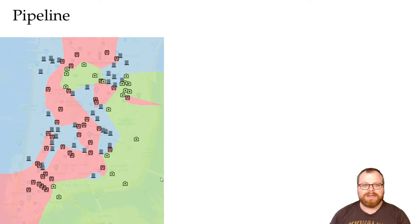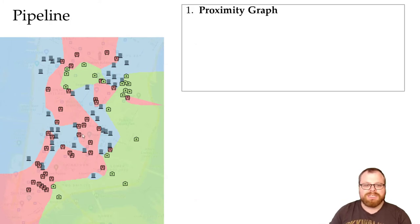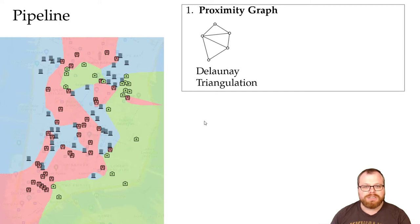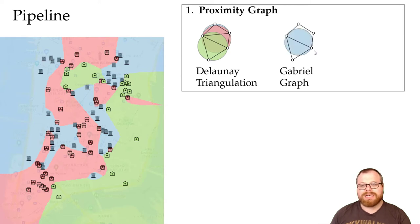We propose the following pipeline for an algorithm. First, we want to pick a proximity graph. There are several established algorithms that can do that, for example, the Delaunay triangulation. In the Gabriel graph, we have an edge between two vertices if the circle that has the connection between them as a diagonal does not contain any other point. And a beta skeleton is a generalization of this.